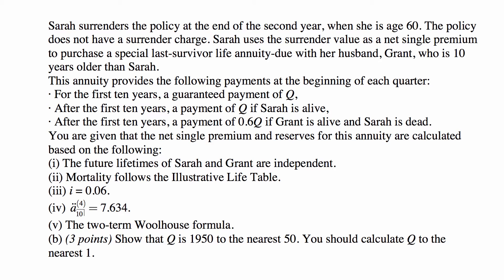For later parts we also have these considerations. Sarah surrenders the policy at the end of the second year when she is age 60. The policy does not have a surrender charge. Sarah uses the surrender value as a net single premium to purchase a special last survivor life annuity due with her husband Grant, who is 10 years older than Sarah. This annuity provides the following payments at the beginning of each quarter: For the first 10 years a guaranteed payment of Q. After the first 10 years a payment of Q if Sarah is alive. After the first 10 years a payment of 0.6Q if Grant is alive and Sarah is dead.